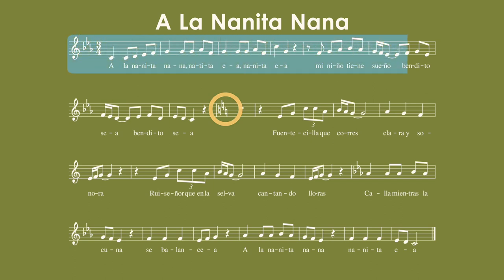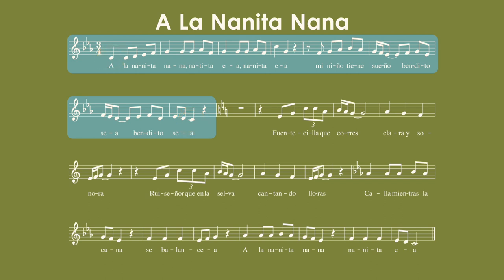If we look at this first part, we have a key signature with three flats. Without looking at any of the music, we would say this is in E flat major. But once we start looking closer at the music, we see that it keeps coming back to C natural as the center of the music. It starts on C natural, and at the end of the phrase, it ends on C natural. So the music is telling us that C natural is more important than E flat in this piece.